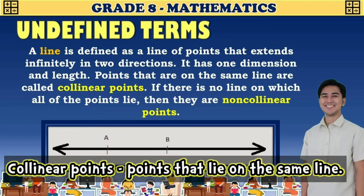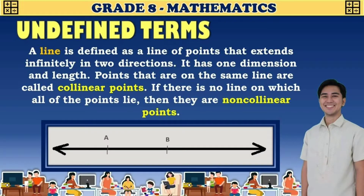Collinear points are points that lie on the same line. In our example, this is line AB, so point A and point B are collinear points. If we add a point not on the line — for example, point C — then point A, point C, and point B are non-collinear points, meaning those three points do not lie on the same line.